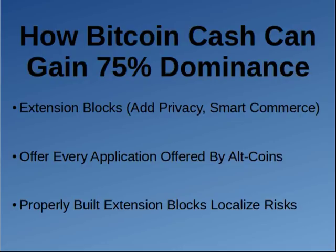For example, if Bitcoin Cash wants to add ZKSNARKs, they can create extension blocks where you send Bitcoin to an address, and then in this address, those Bitcoin can now be transacted using the ZKSNARK protocol rather than the Bitcoin protocol. The good thing about extension blocks is that any sort of failure of coins in that extension block is completely localized to that extension block.